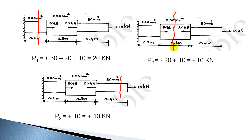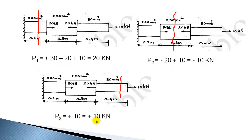In the second section, considering forces on the right side part: we have minus 20 kilo Newton (leftward) and plus 10 kilo Newton (rightward), giving P2 = minus 10 kilo Newton. For the last section, beyond that section there is only one force: 10 kilo Newton acting towards right, so P3 = plus 10 kilo Newton. So the internal forces are P1 = 20 kN, P2 = −10 kN, and P3 = +10 kN.